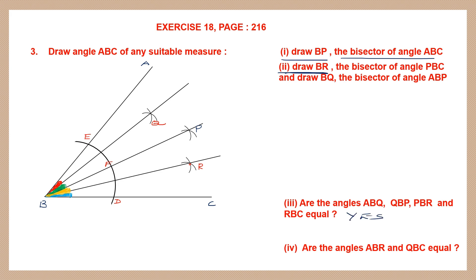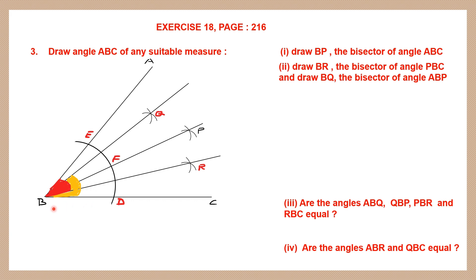Then the question: are angles ABR and QBC equal? ABR is the angle in red, and QBC is the one in yellow. Are they equal? The answer is yes, they are equal.